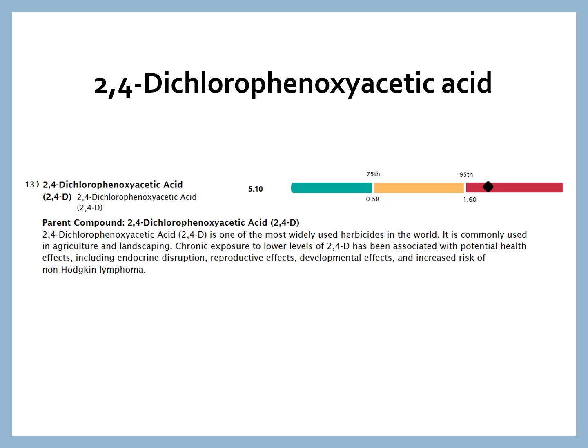2,4-D, which stands for 2,4-dichlorophenoxic acetic acid, is a widely used herbicide throughout the world, commonly used in agriculture and landscaping. Sometimes it's combined with glyphosate. It is an endocrine disruptor — it can lead to reproductive problems, developmental disorders, and there's also an increased risk of non-Hodgkin's lymphoma from prolonged 2,4-D exposure.